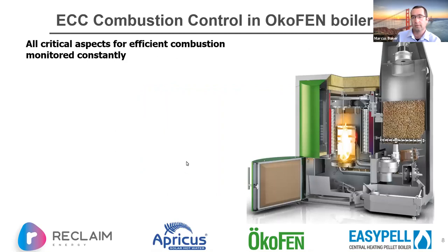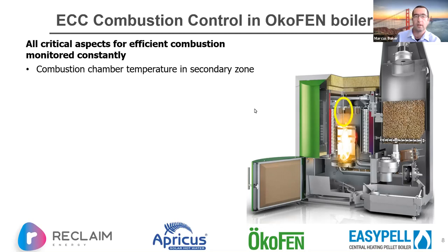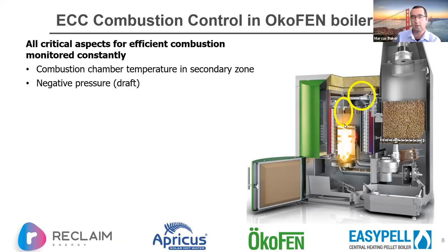In an Ökofen context there's what's called ECC — electronic combustion control — which is constantly monitored in real-time continuous commissioning. Temperature is monitored in the secondary zone to keep it in the optimum window. There's also negative pressure monitoring to determine how much air is moving through the system, which is a proxy for how much oxygen is available for combustion — getting that fuel-to-oxygen ratio just in the sweet spot.